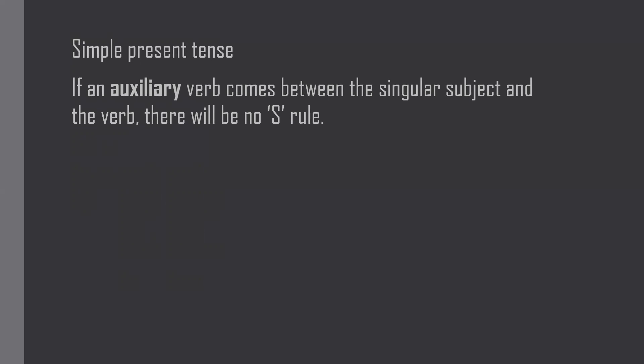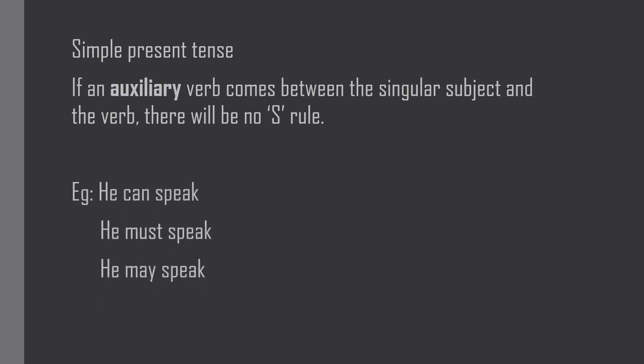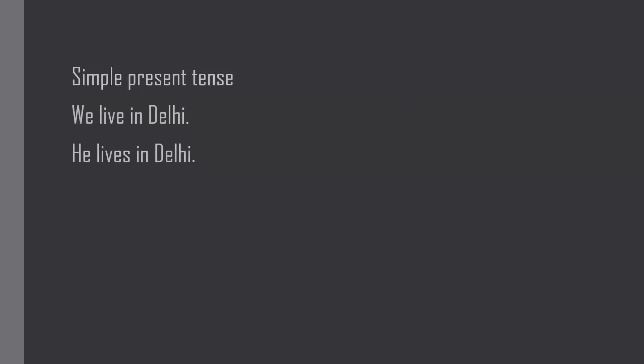One more thing: if an auxiliary verb comes between the subject and the verb, there is no S rule. For example, if you say 'he can speak,' we do not say 'he can speaks.' Similarly, 'he must speak,' not 'he must speaks,' and 'he may speak,' not 'he may speaks' — because can, must, and may are auxiliary verbs. When an auxiliary verb is present, we do not follow the S rule.